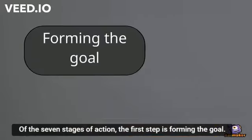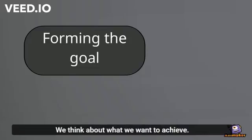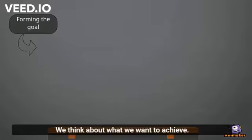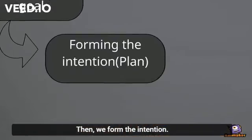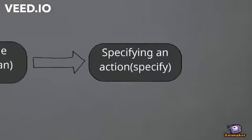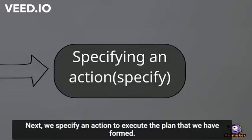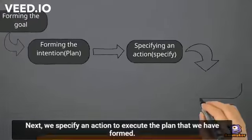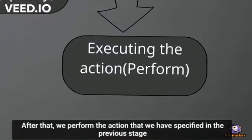Of the seven stages of action, the first step is forming the goal — we think about what we want to achieve. Then we form the intention, meaning we make a plan. Next we specify an action to execute the plan. After that, we perform the action that we have specified in the previous stage.